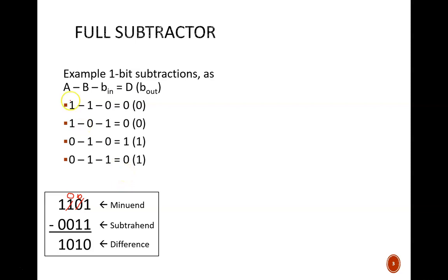These bullets provide a few possible subtractions that may be encountered. All of them include three input bits: the given minuend A, the given subtrahend B, and a possible borrow, little b sub n. There are two output values: the resulting difference D, and whether or not a borrow is needed, b sub out.